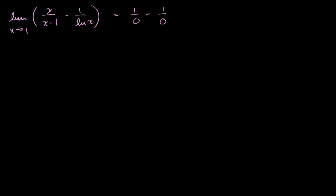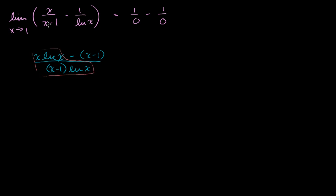Let's add these two expressions together. The common denominator is x minus 1 times the natural log of x. The numerator becomes x times the natural log of x, minus x minus 1. You can verify this is equivalent to the original expression: the first term simplifies to x over x minus 1, and the second term simplifies to 1 over natural log of x.